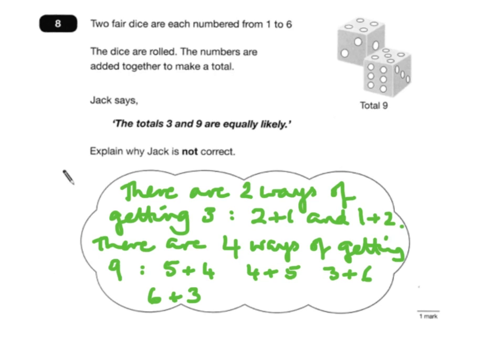and you can get six on the other dice and three on the other. So Jack is not correct for that reason, because the likelihood of getting a nine is actually double the likelihood of getting a three. So a nine is more likely.